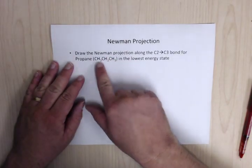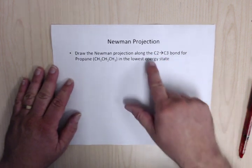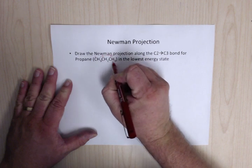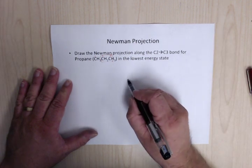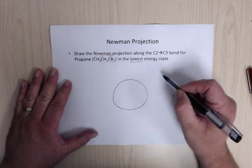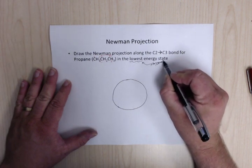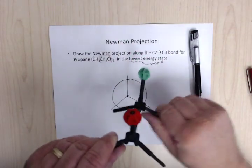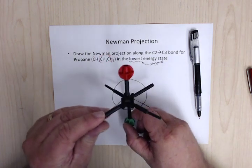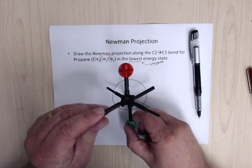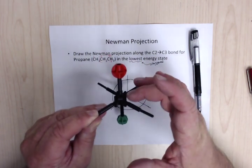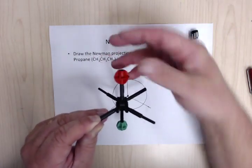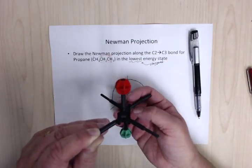Next is the Newman projection. I'll show you the molecule and tell you which bond to look down. Here I want C2–C3 — so this is carbon 1, 2, 3 — we want to look down that bond. You're going to do the lowest energy state, but this example will be staggered. Remember with Newman projections, you can see the front carbon clearly — this would be C2 — and C3 is obscured by C2, but you can see the three groups popping out from behind.